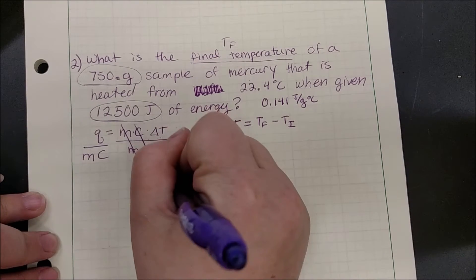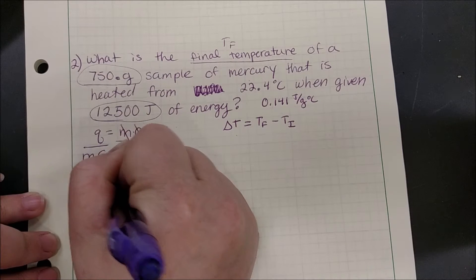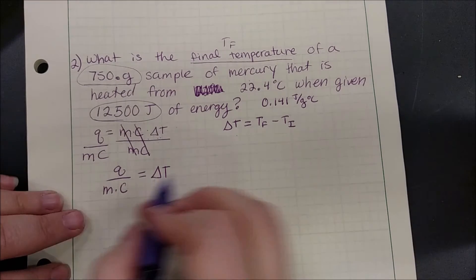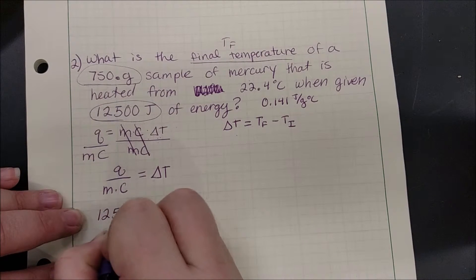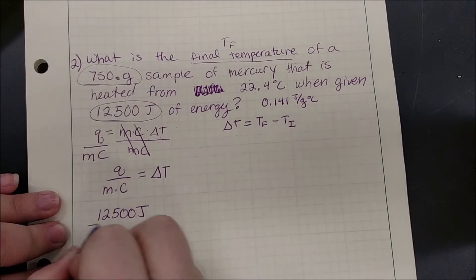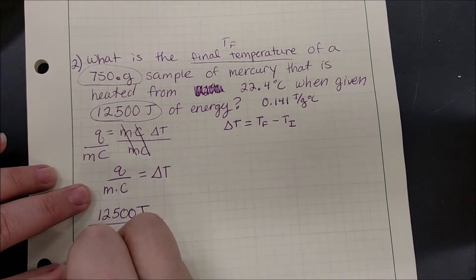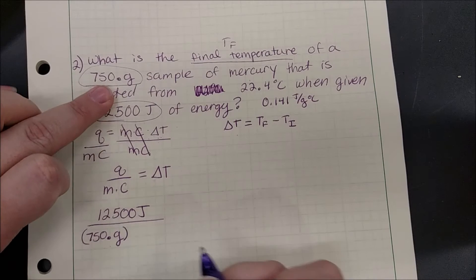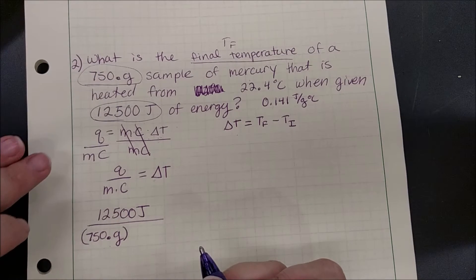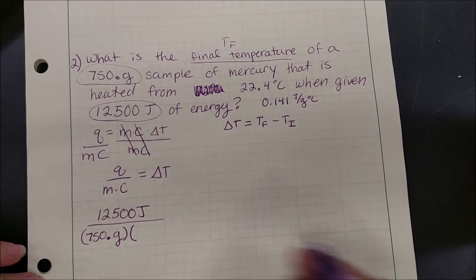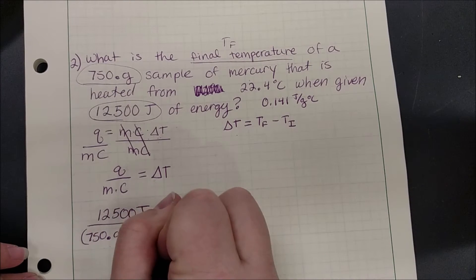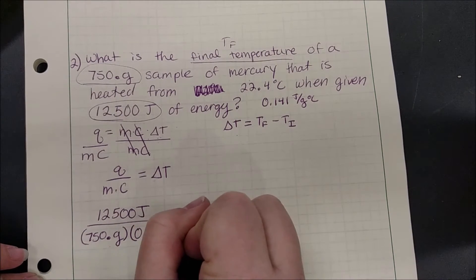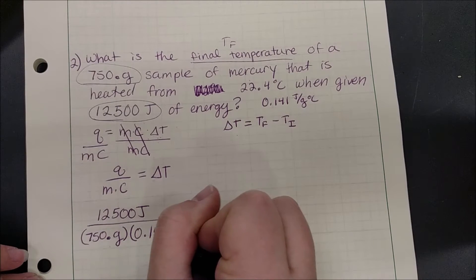To isolate ΔT, we divide both sides by M and C, giving us ΔT equals Q over mass times specific heat. Our Q is 12,500 joules, our mass is 750. grams — including the decimal so I can count sig figs — and our specific heat is 0.141 joules per gram degrees Celsius.